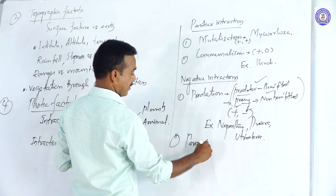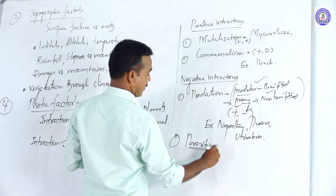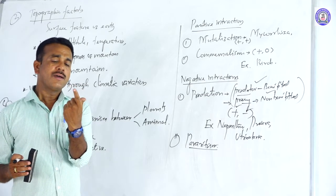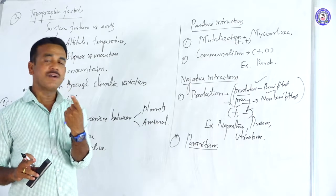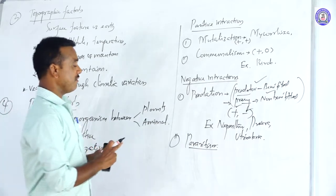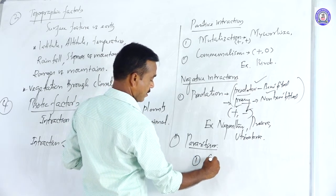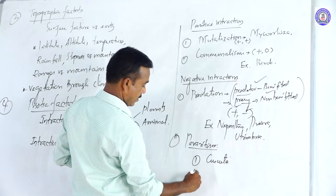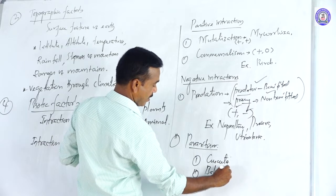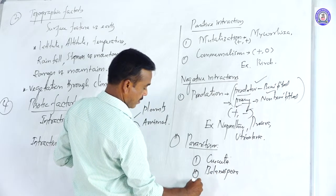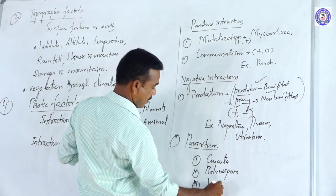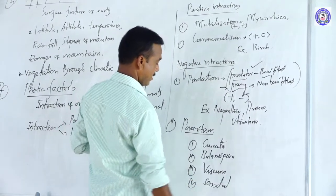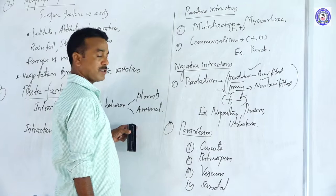The second negative interaction is parasitism. In parasitism, two organisms interact where one organism benefits and the other organism is harmed. Examples of parasitism include Cuscuta, Balanophora, Viscum, and Sandalum.